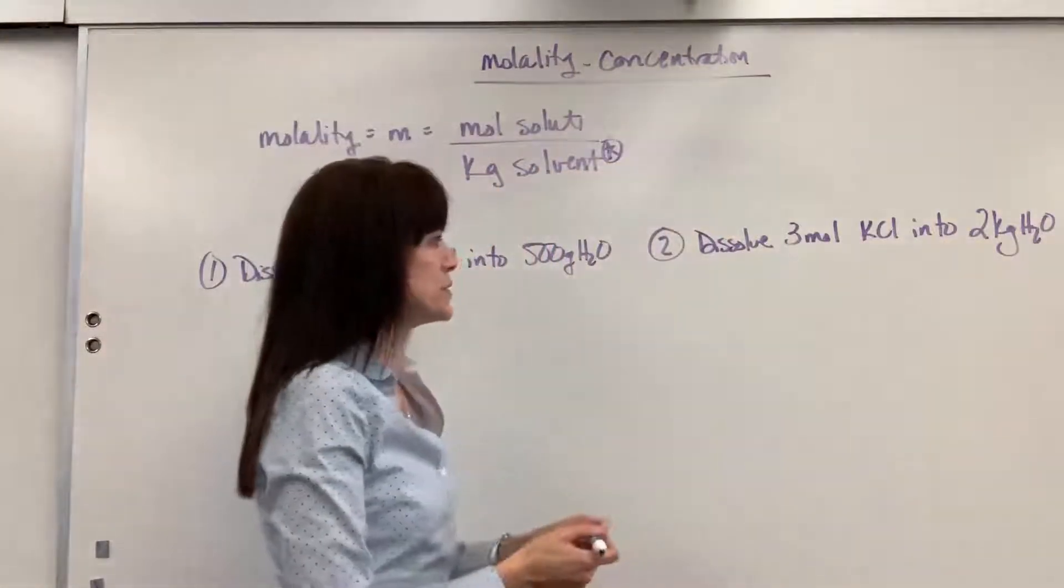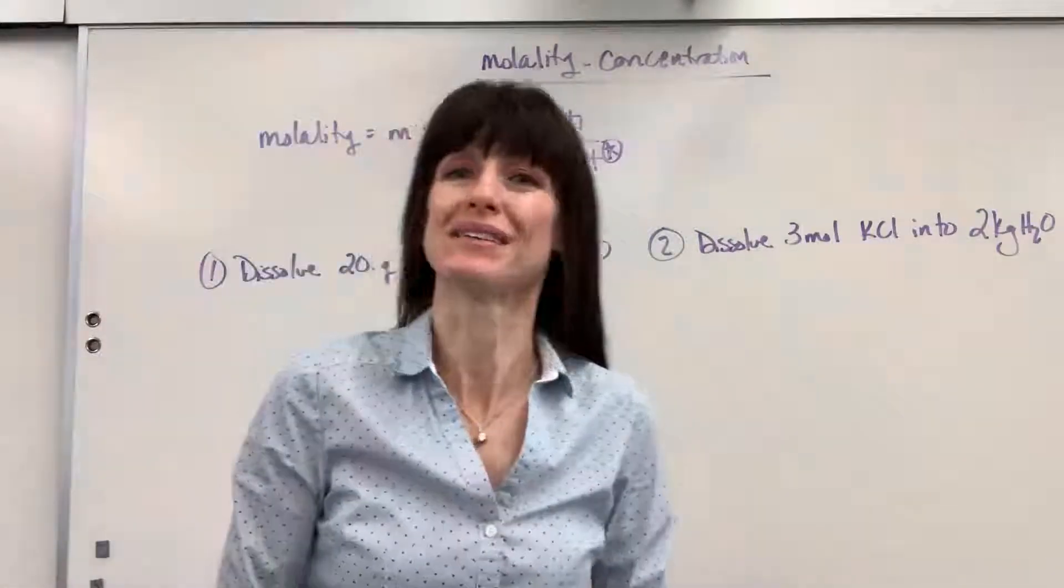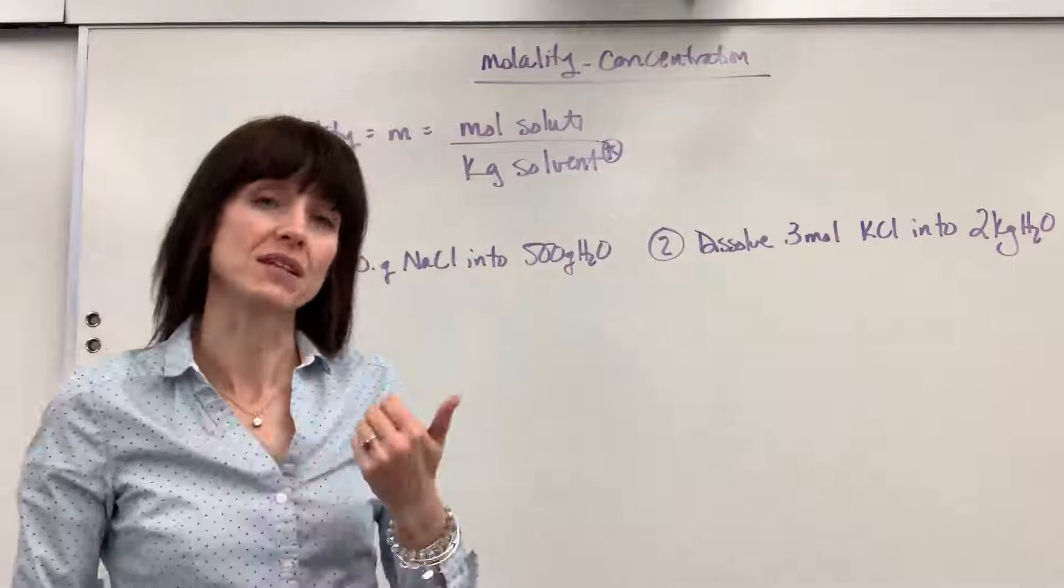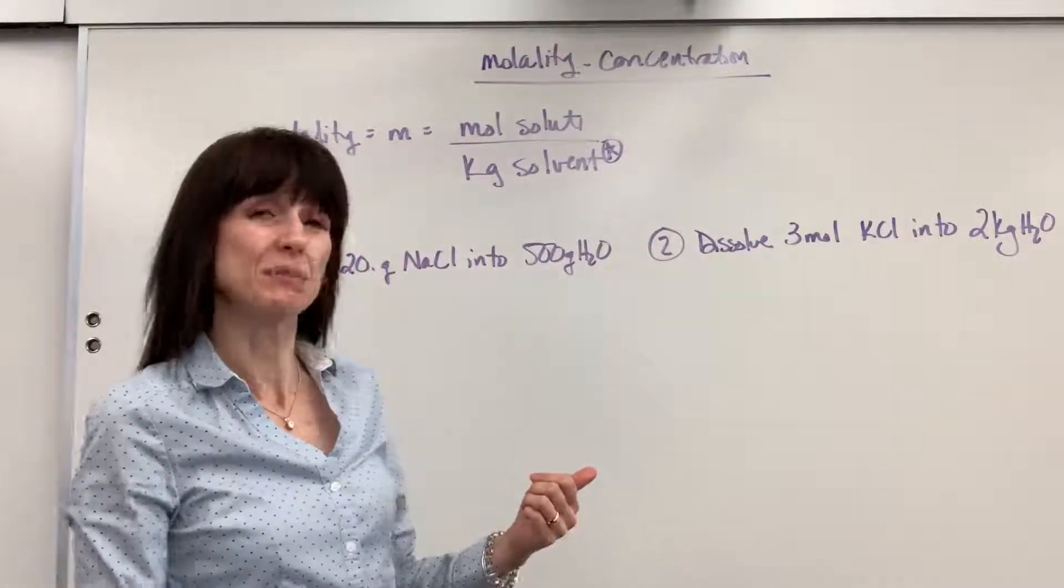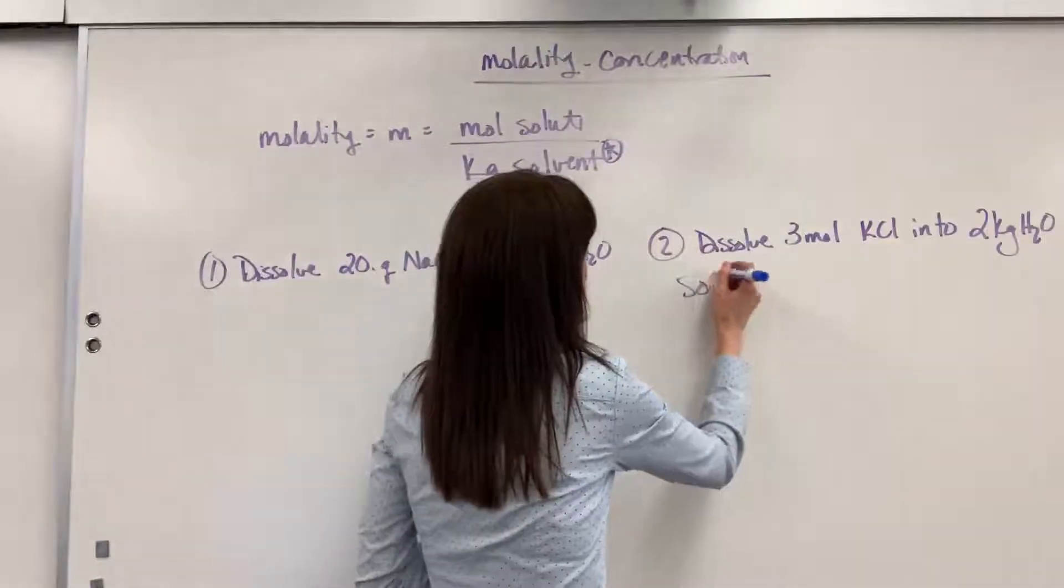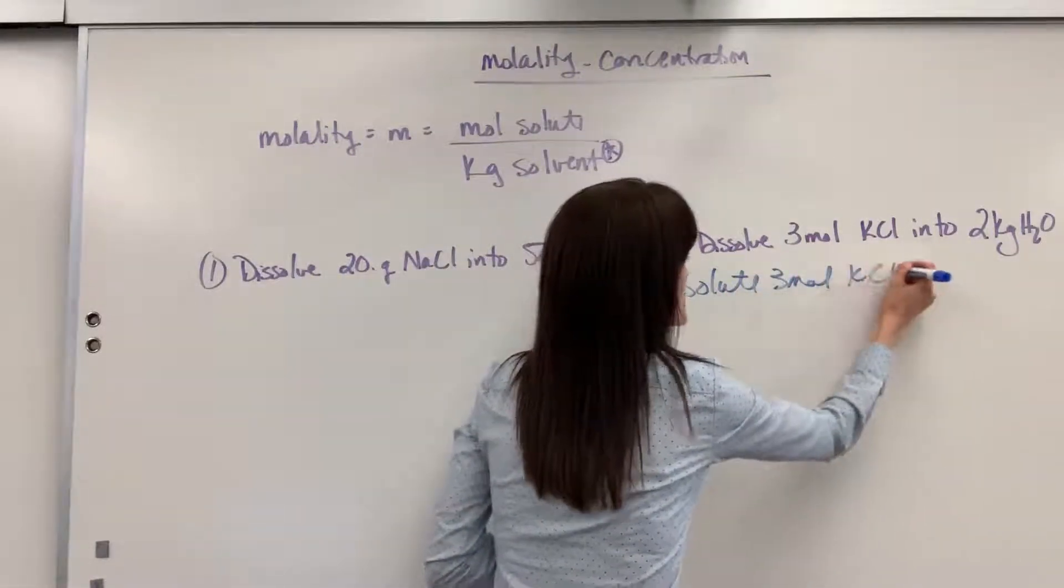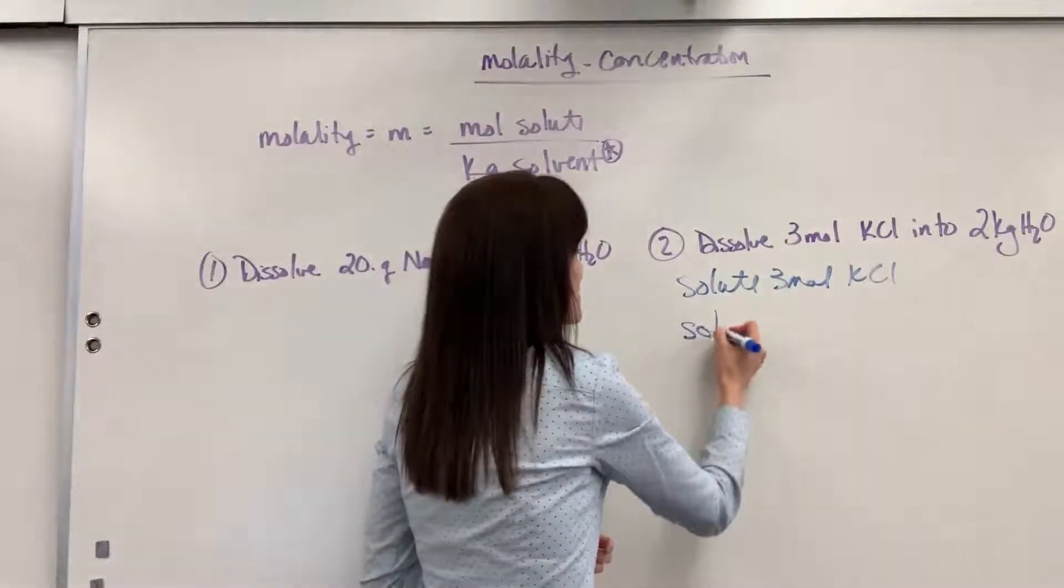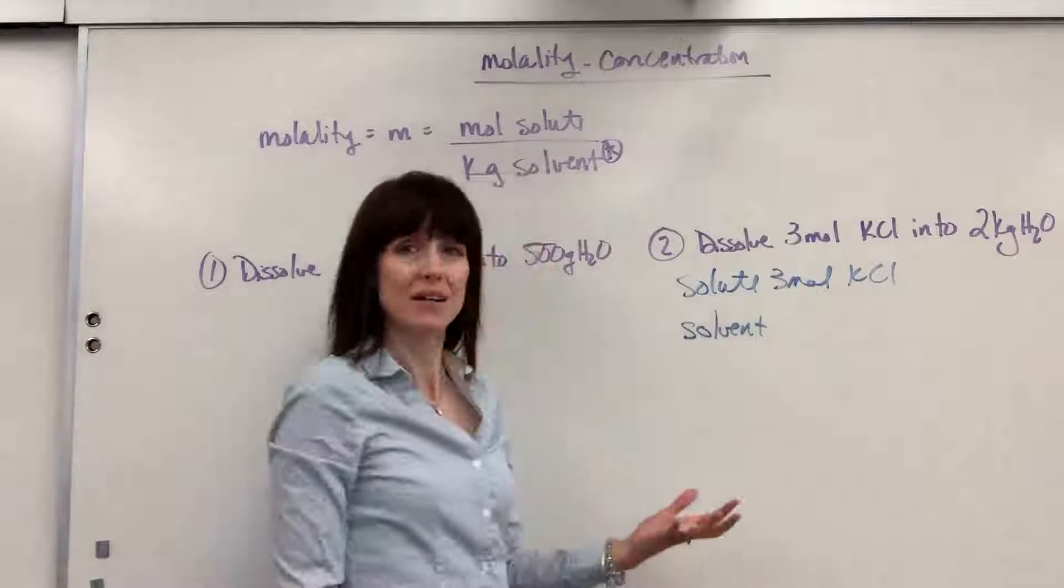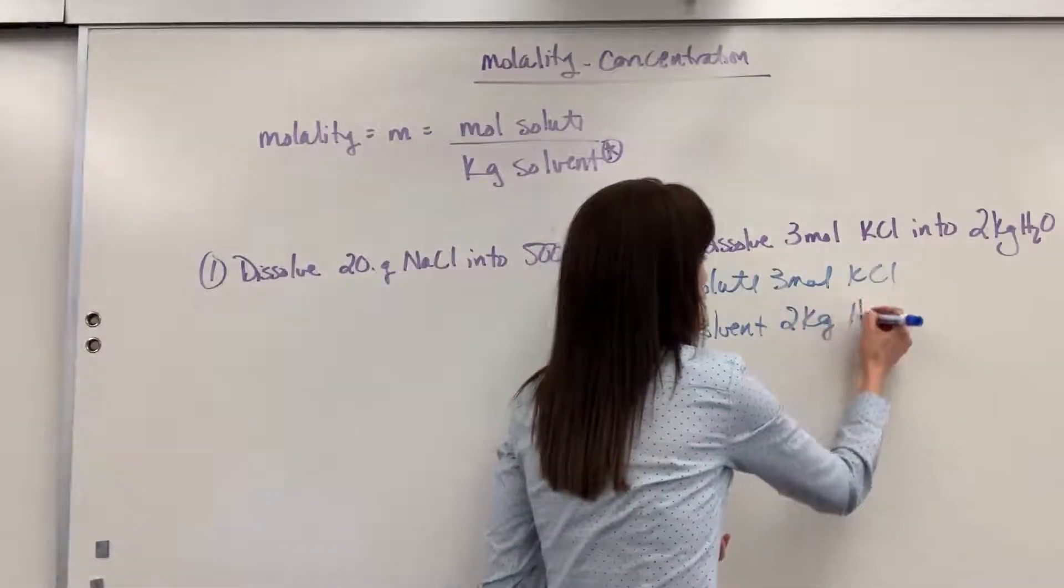Let's start with this number two. We're going to dissolve three moles of potassium chloride into two kilograms of water. So first thing I do is identify my solute and my solvent. The solute is what is going to be dissolved. So the solute is my three moles of potassium chloride, and the solvent does the dissolving. So the solvent is going to be water. Our number one polar solvent is water. We've got two kilograms of water.